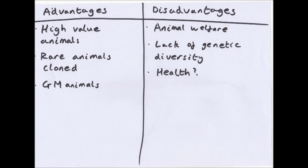Disadvantages: animal welfare is often not considered in cloning. Some strains of meat-producing chickens have been developed that are unable to walk, which is not good for the animal. Lack of genetic diversity again means any change in the environment could cause a problem. There are also unknown health issues — for example, Dolly the sheep was put down at age six suffering from a form of lung cancer caused by a virus.